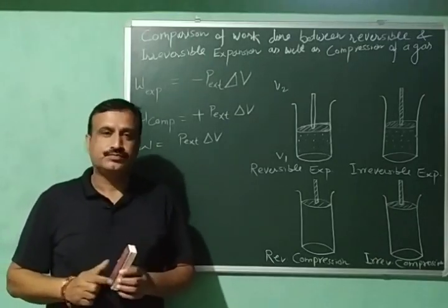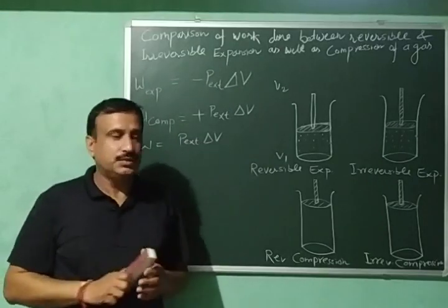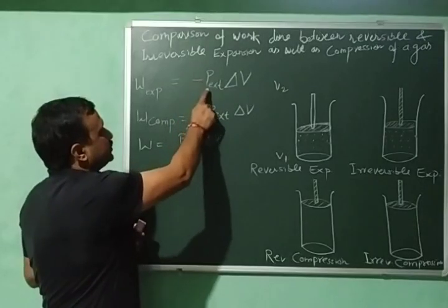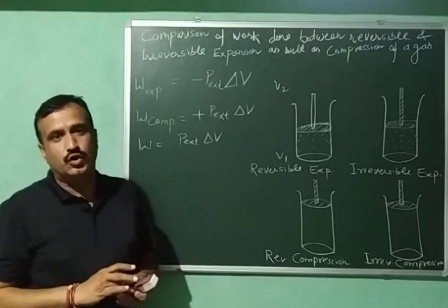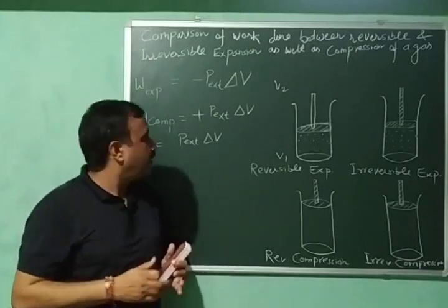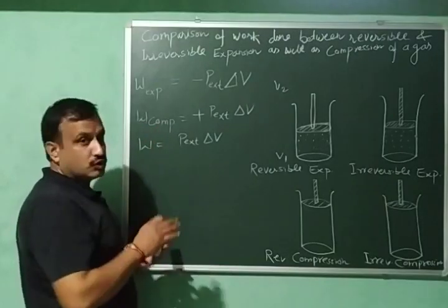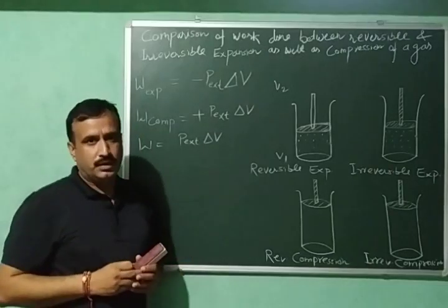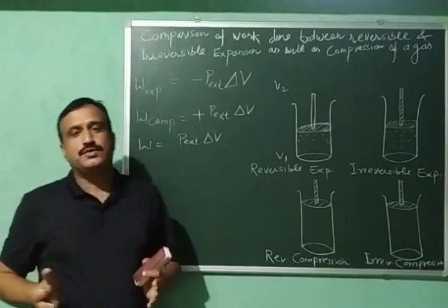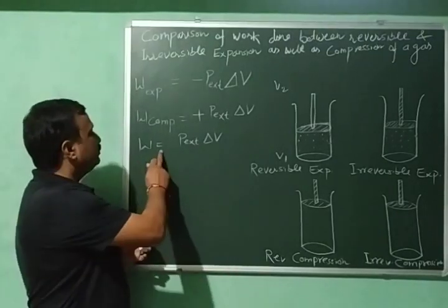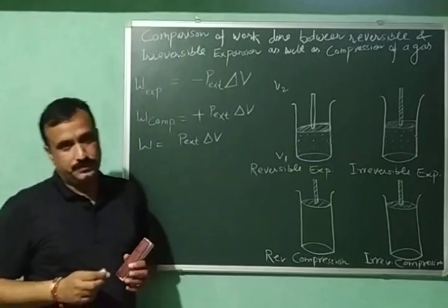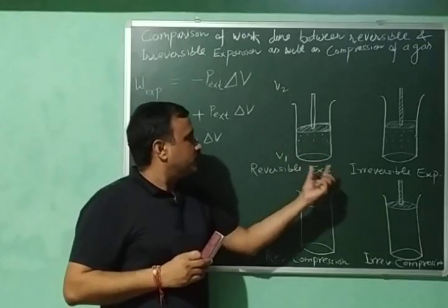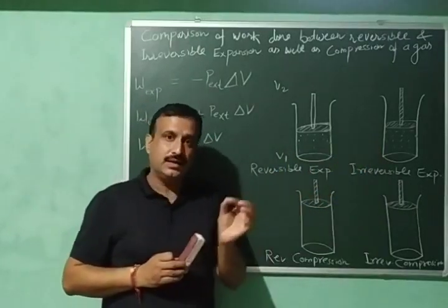In my previous video I told you that work of expansion is given by minus P_external × ΔV, also called work done by the system. Work of compression, also called work done on the system, is given by plus P_external × ΔV. If we ignore the signs for now, the work done will be equal to P_external × ΔV.